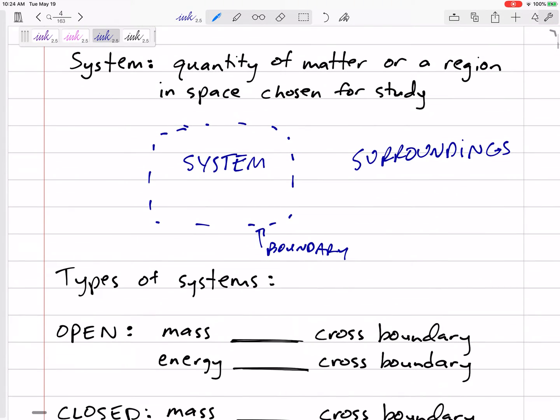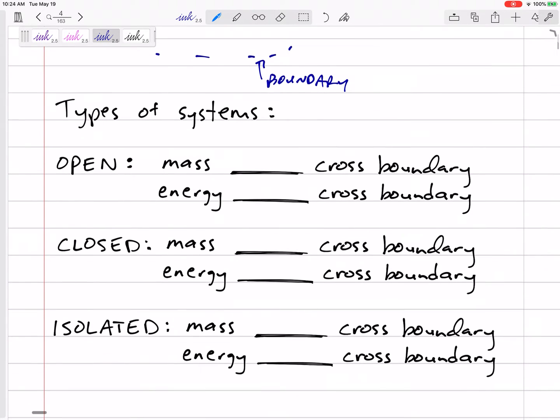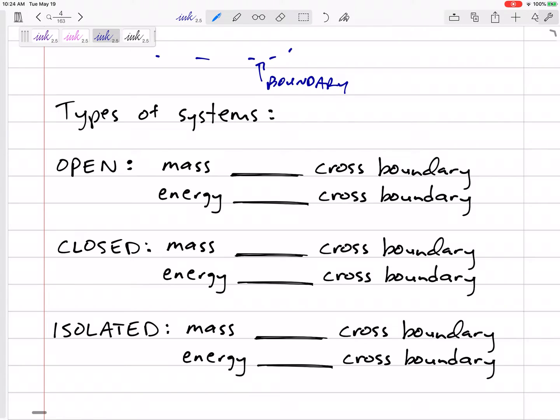Right, the system is the quantity we're studying. The boundary separates the system from our surroundings. There are three different types of systems we'll be looking at. An open system: mass can cross the boundary and energy can cross the boundary, so there could be fluid flowing in and out of the boundary.